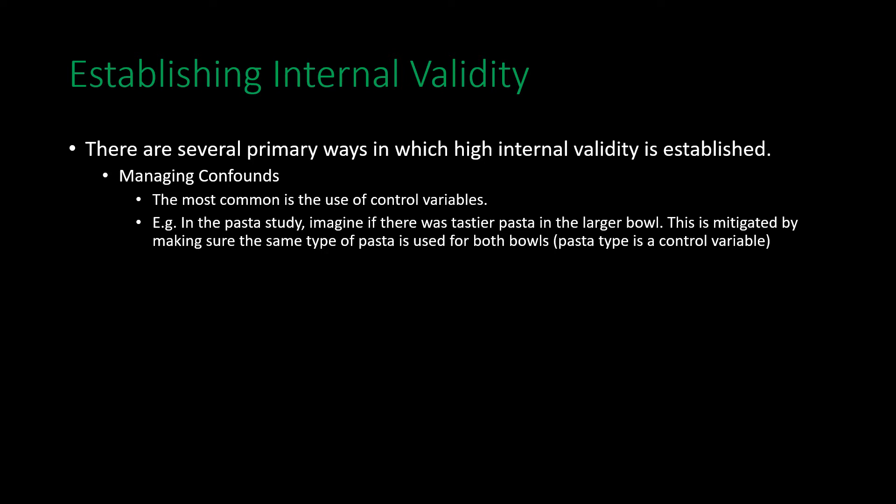For example, in the pasta study, imagine if there was tastier pasta in the larger bowl. People might eat more from the larger bowl not because it was larger, but because the pasta was tastier — that would be a confound. This could be mitigated by using the same type of pasta in both bowls, making it a control variable. While type of pasta may influence eating, by keeping it constant across both groups we rule out its effect on how much they ate.